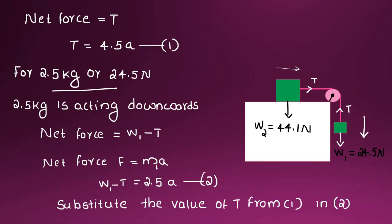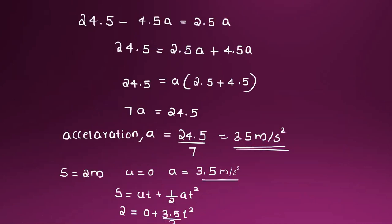For the hanging mass of 2.5 kg, the equation gives: 24.5 minus T equals 2.5 a. Adding both equations: 24.5 minus 4.5a equals 2.5a, so 24.5 equals 2.5a plus 4.5a, giving 7a equals 24.5.